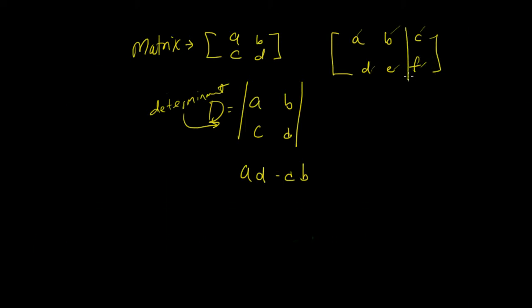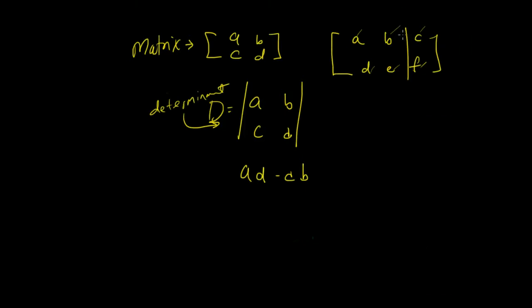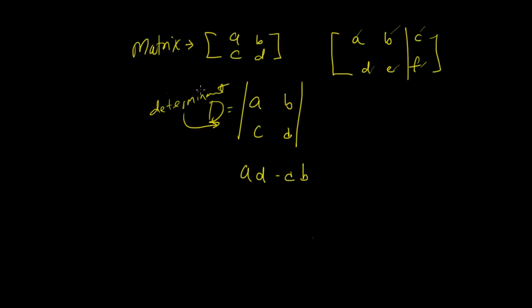We can use a figure called the determinant. If we can create this matrix into a 2 by 2 matrix, then we can discover the determinant by multiplying across AD and subtracting from that the product of B and C. That will give us the determinant of the matrix.